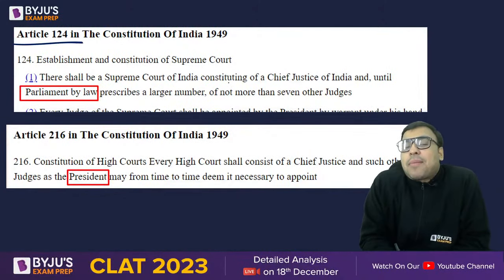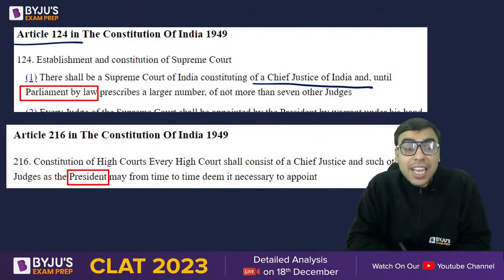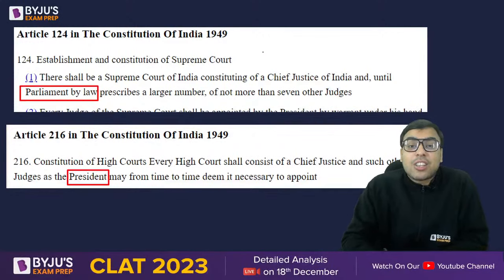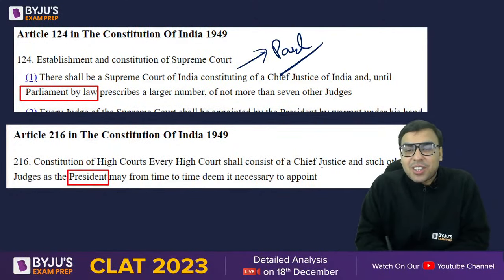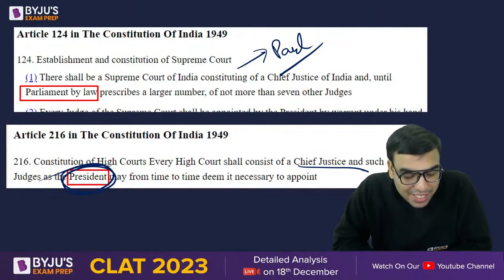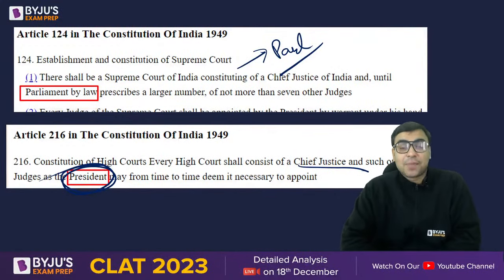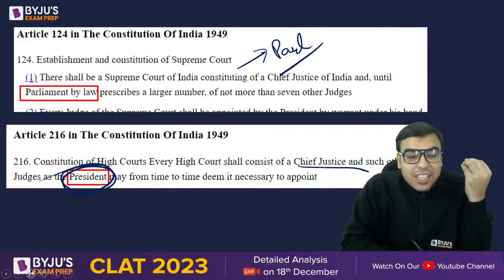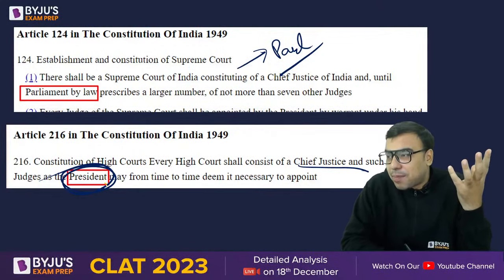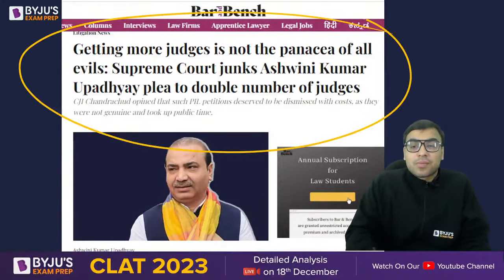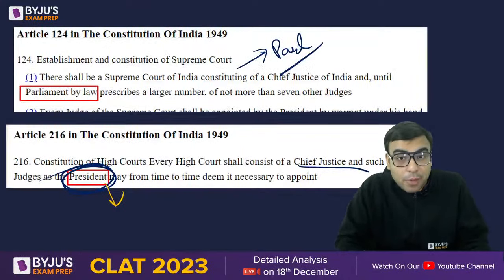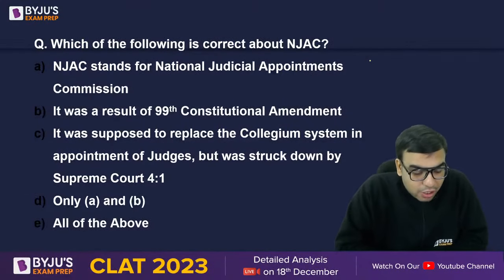Article 124 says there shall be a Supreme Court of India consisting of the Chief Justice and, until Parliament by law prescribes a larger number, not more than seven other judges. So the strength of the Supreme Court can be increased by Parliament of India. The strength of the High Court can be increased by the President of India — so President of India is the answer. It is by Presidential order.